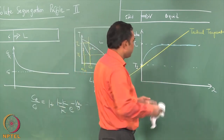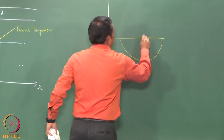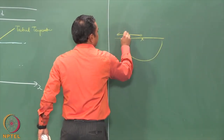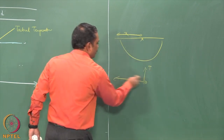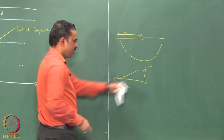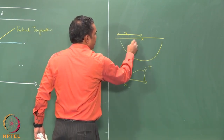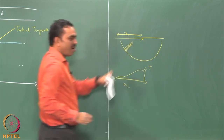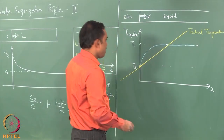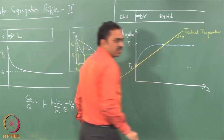In the weld zone, over a small distance the temperature profile is going to be fairly linear, and that is what we are assuming. Therefore, this plot can be represented with one gradient G. Now there are various possibilities existing in a real weld.